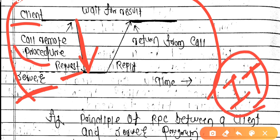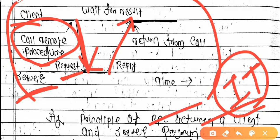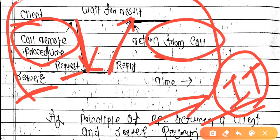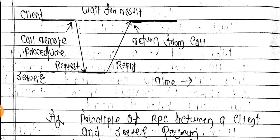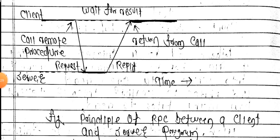These are Remote Procedure Calls — the client sends a request, and the server replies. So this is all about Remote Procedure Calls, communication between systems, and the basic operations of RPC.